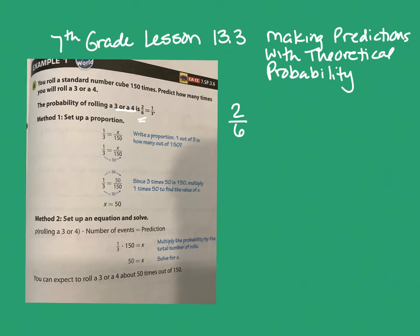That's where this number came from, and we can reduce it down to work with smaller numbers. Two divides evenly into both: two divided by two is one, and six divided by two is three. So there's a one in three chance that we're going to roll a three or a four if we roll just one time.